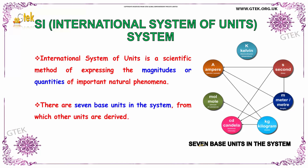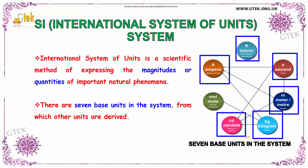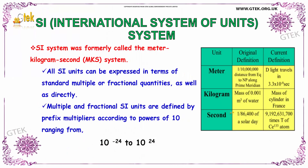These are the 7 basic SI units: ampere for electric current, Kelvin for temperature, second for time, meter for length, kilogram for mass, candela for luminous intensity, and mole for amount of substance. SI units was formally called the meter-kilogram-second system, or MKS. All SI units can be expressed in terms of standard multiples or fractional quantities. These are defined by multipliers according to powers of 10 ranging from 10 to the power of minus 24 to 10 to the power of 24.